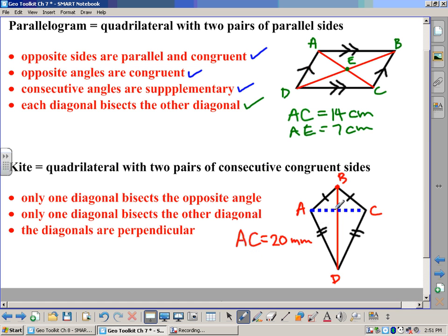therefore here in the middle, let's call that point E here, we could say AE would have to be 10 millimeters. But keep in mind, it only cuts the blue dotted one in half. It only bisects that one. It does not bisect BD.